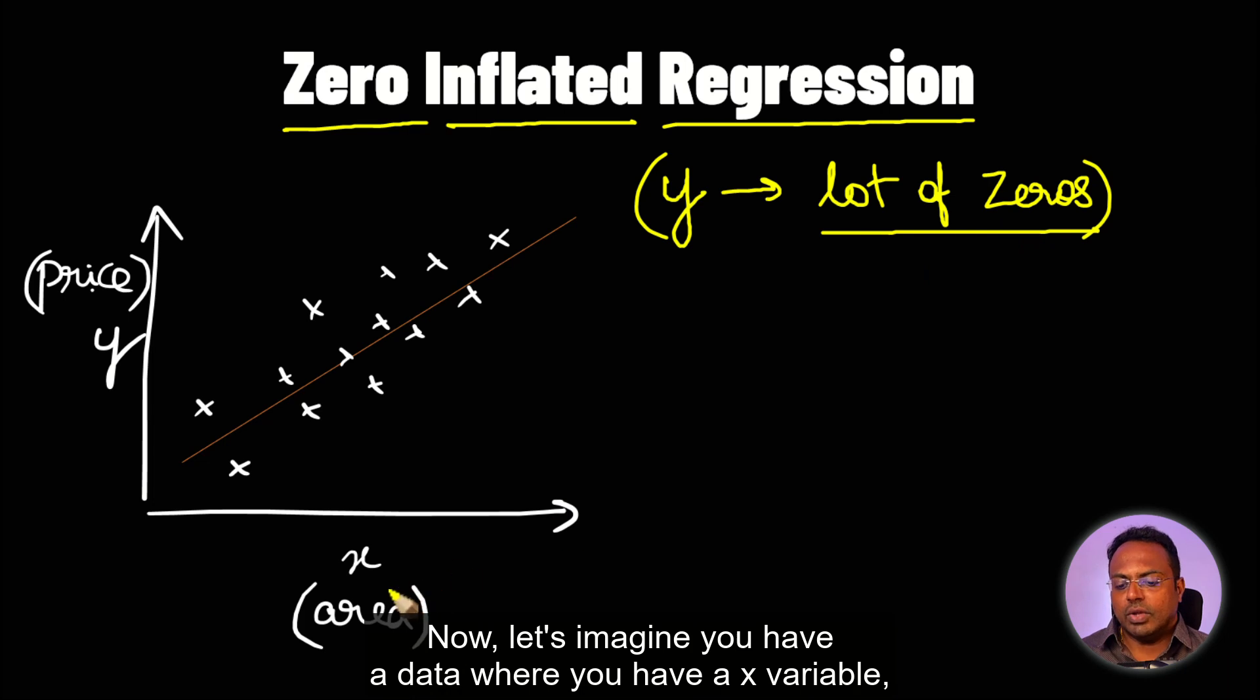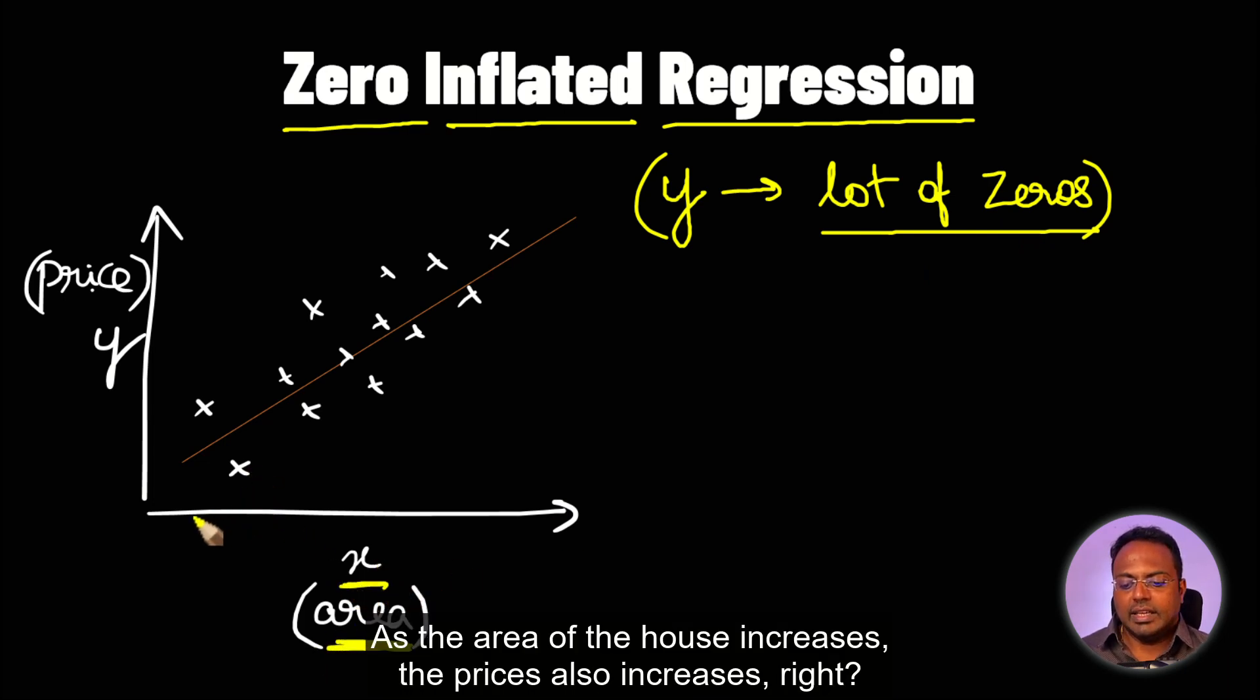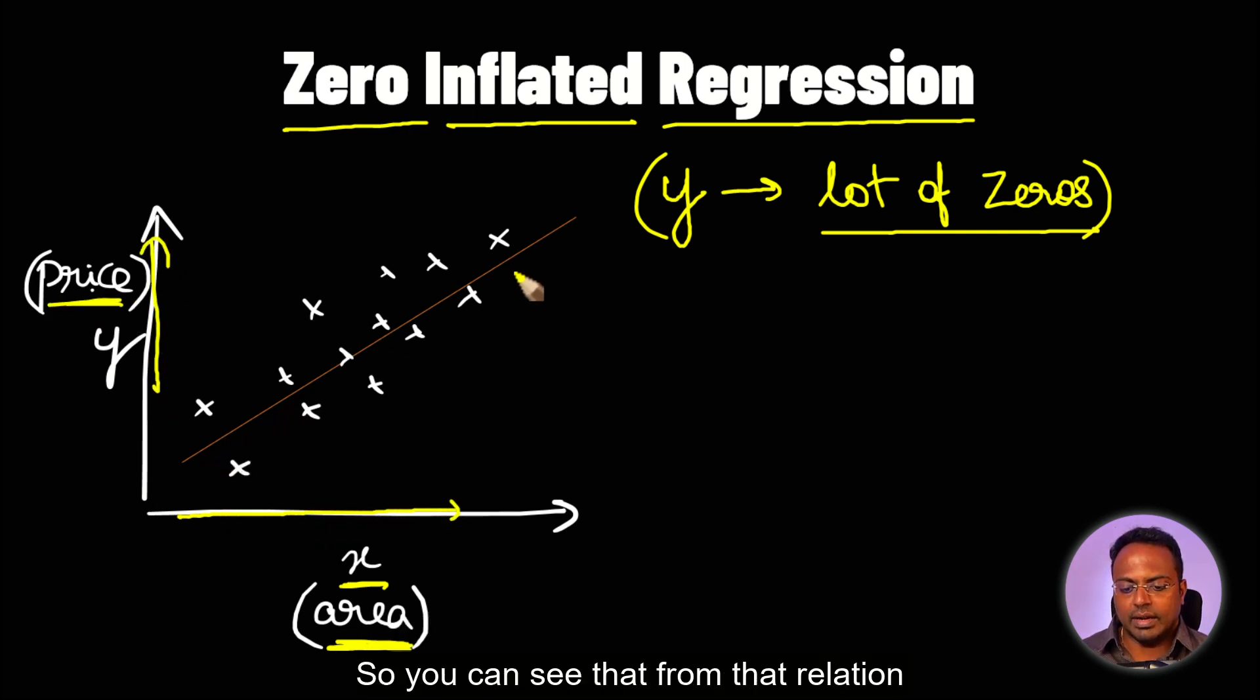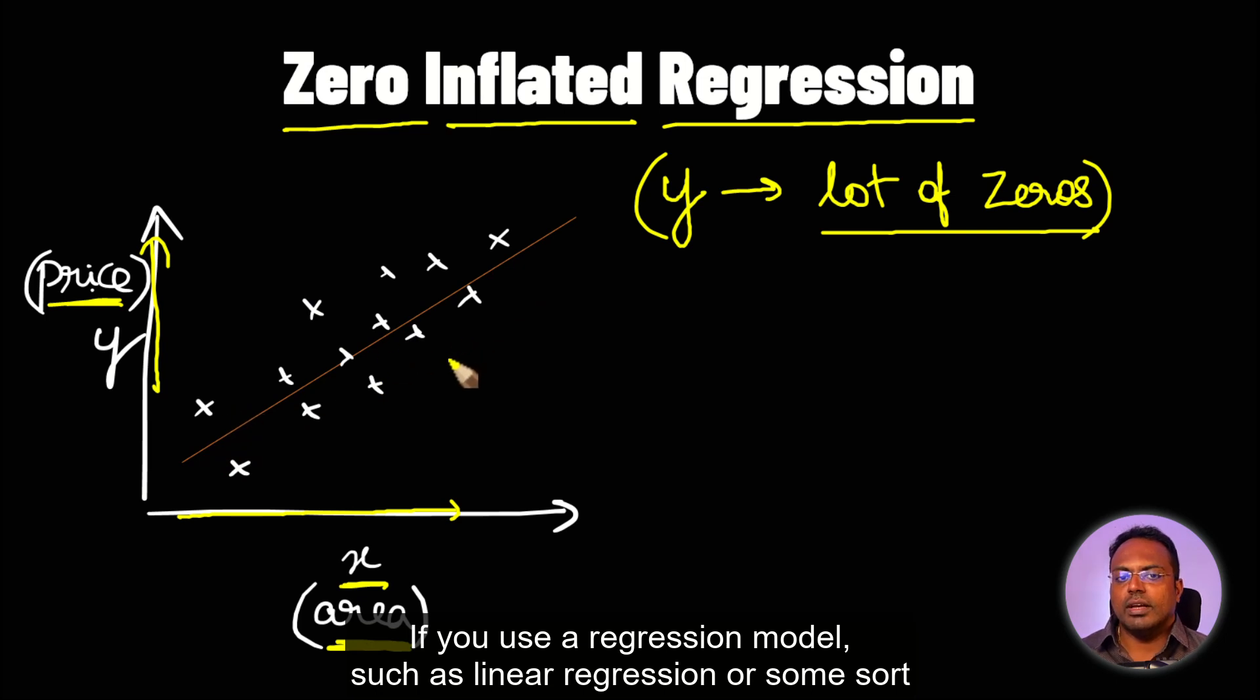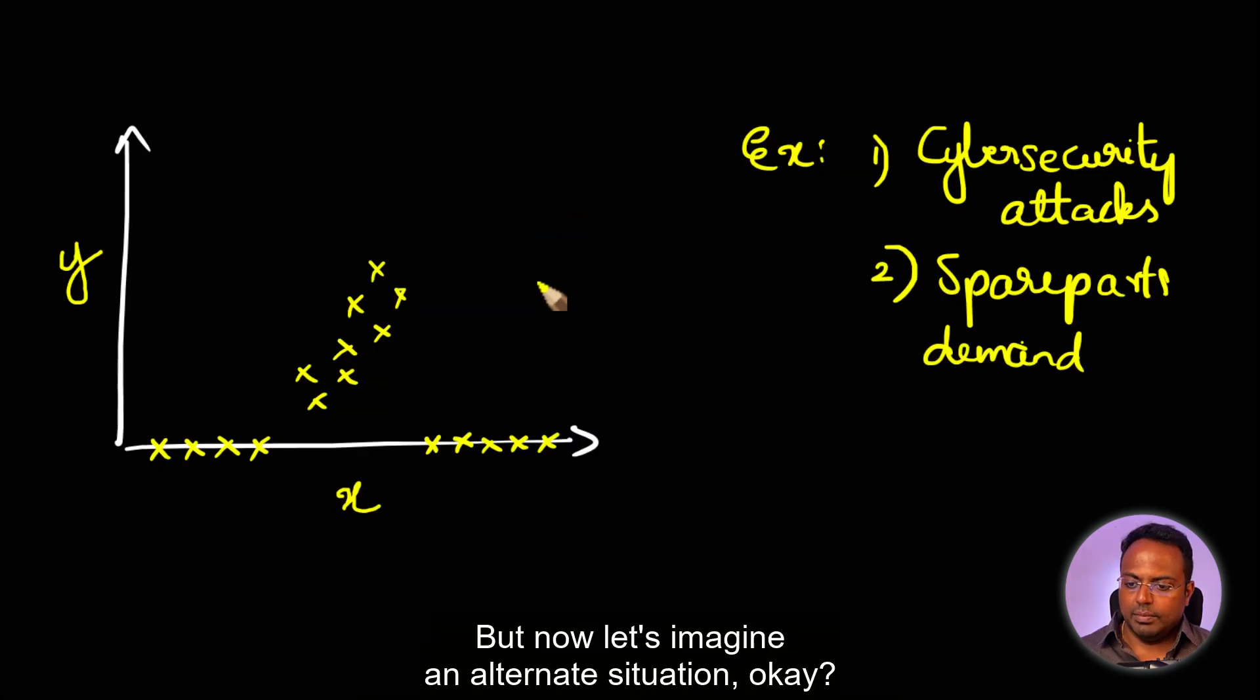Now, let's imagine you have data where you have an X variable, say the area of the house. As the area of the house increases, the prices also increase. You can see that from that relation. If you use a regression model such as linear regression or some sort of regression model to predict this, you might get a line of best fit that looks something like this.